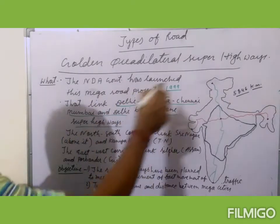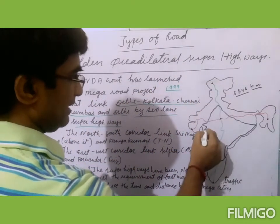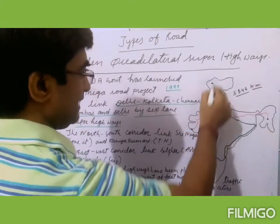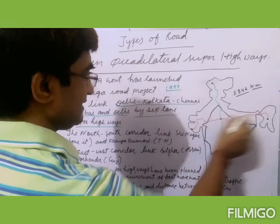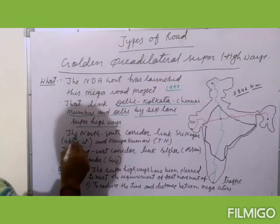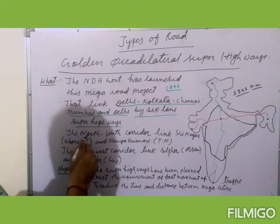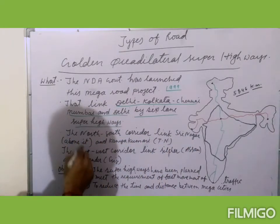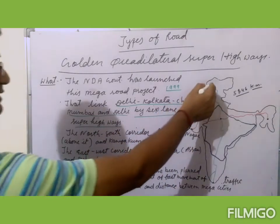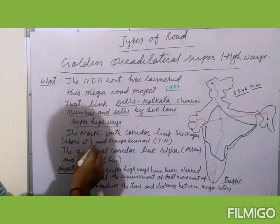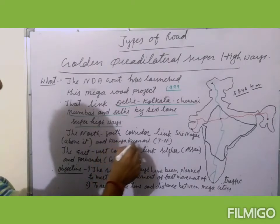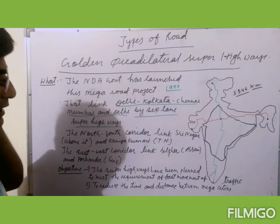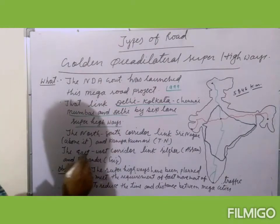There were two types of corridor. This is the Golden Quadrilateral Super Highway, and these are the North-to-South corridor and the East-to-West corridor. The North-South corridor links Srinagar — even the distance has been increased — connected with Kanyakumari, which is in Tamil Nadu.